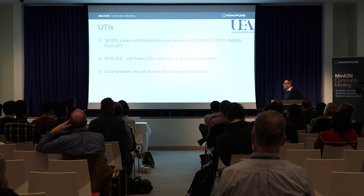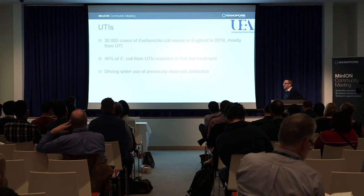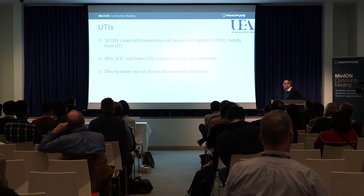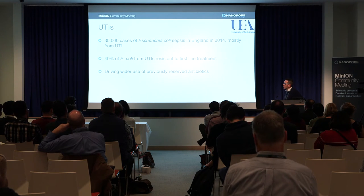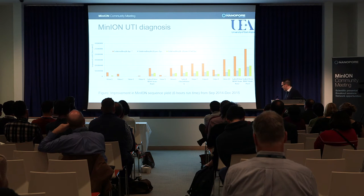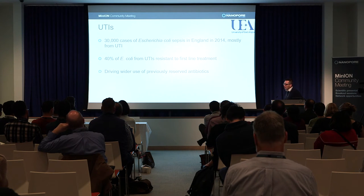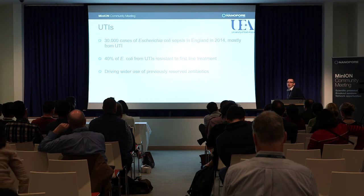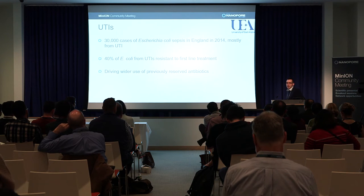About 40% of the E. coli isolates are resistant to first-line treatment. What's happening now is this is driving the use of previously reserved antibiotics for simple infections like UTIs, and that isn't ideal. So we've decided to try and address this by using Oxford Nanopore sequencing to rapidly diagnose UTIs in serious cases.